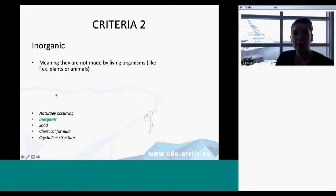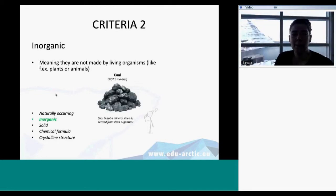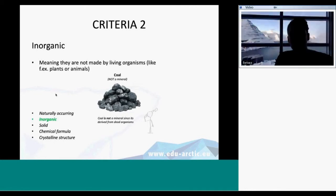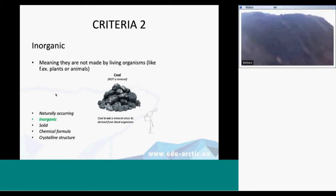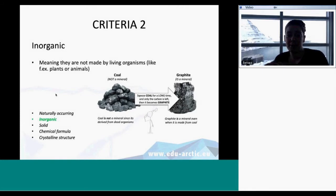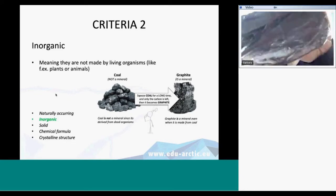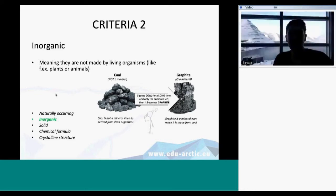If we go to criteria two, meaning they are inorganic, that just means they are not made by any living organisms, not made by plants or animals. There's some mystery. If you look at coal, for example, here's an example. Coal is made from dead organisms, so that's not a mineral. But if you squeeze coal for a very, very long time, extremely long time, then only the carbon will be left and it's coal graphite. And graphite is actually a mineral. That's a little bit of a mystery regarding criteria two.